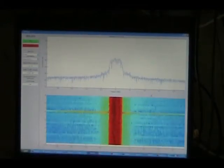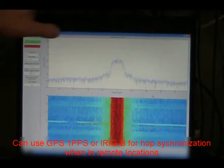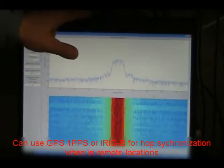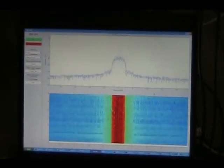The RF4902 can also use GPS one pulse per second, or iRig B, to tell it what time it is for hop synchronization between the transmitter and receiver that are in remote locations.